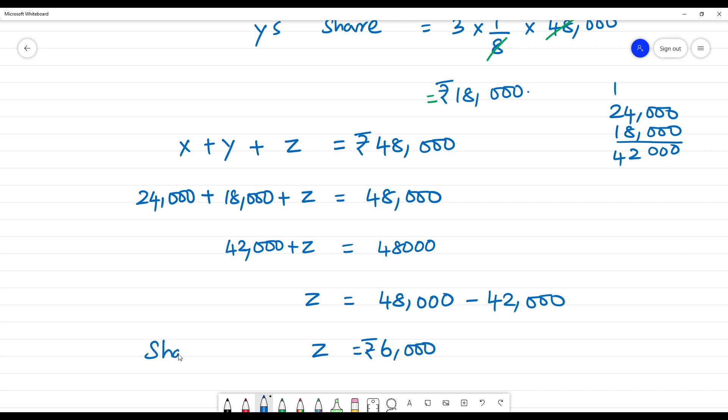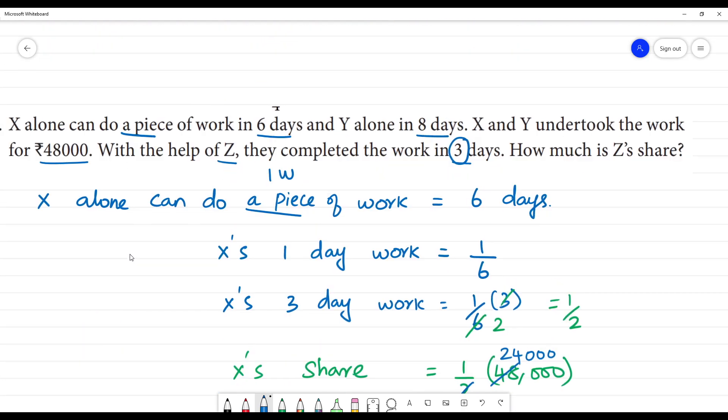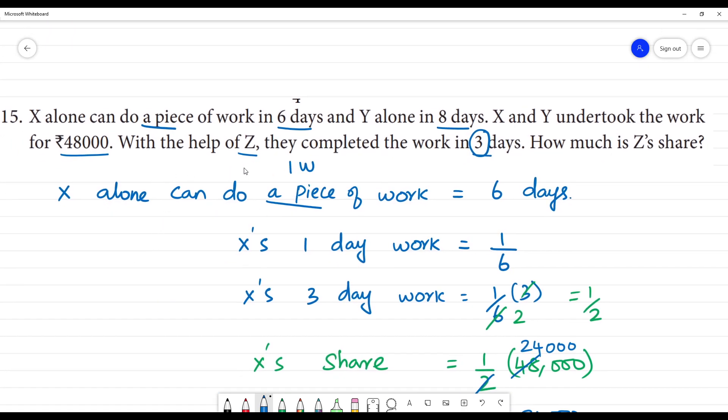That is the share of Z. Clear? The question asked, with the help of Z they completed the work, how much is Z's share? We calculated X and Y's shares first, then found Z's share. Clear?